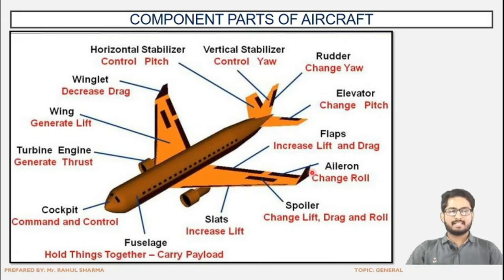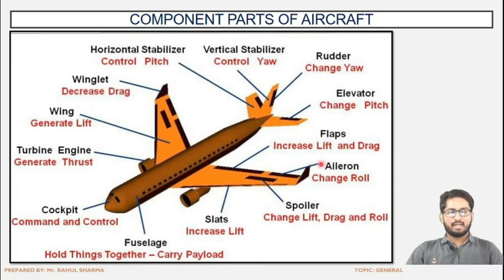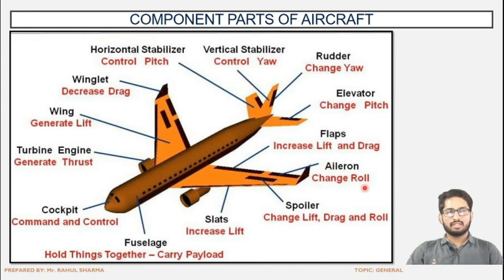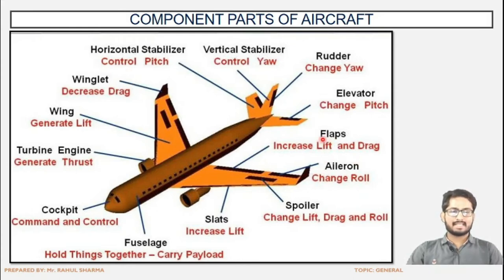Next is the aileron, which is along the backward edge of the wings. The aileron is for changing the roll — roll means the front and back movement of the aircraft along the longitudinal axis. The function of the aileron is changing the longitudinal movement; the front and back movement of the aircraft is done through the aileron.